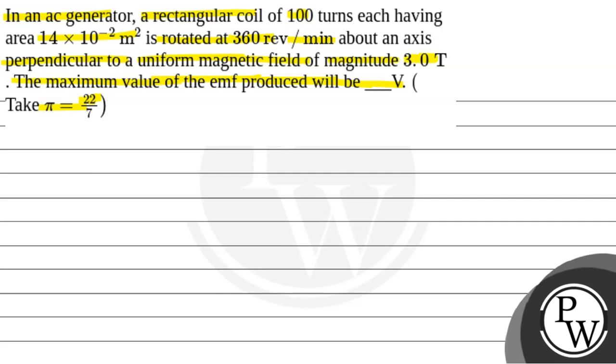Now we have an AC generator which is a rectangular coil. The total number of turns of the rectangular coil is 100. The area is equal to 14 into 10 to the power minus 2 meter square. And the angular velocity ω is equal to 360 revolutions per minute.